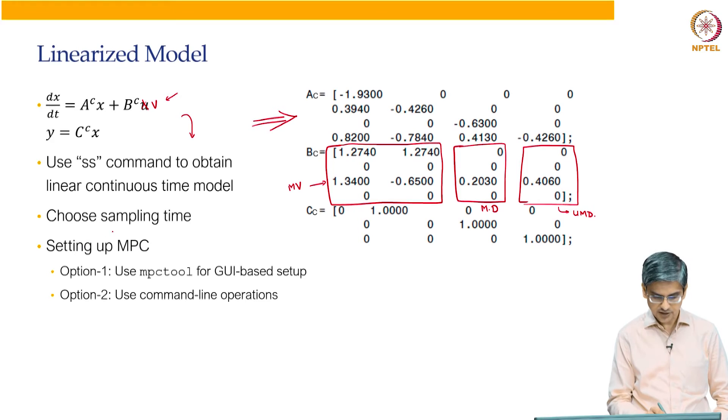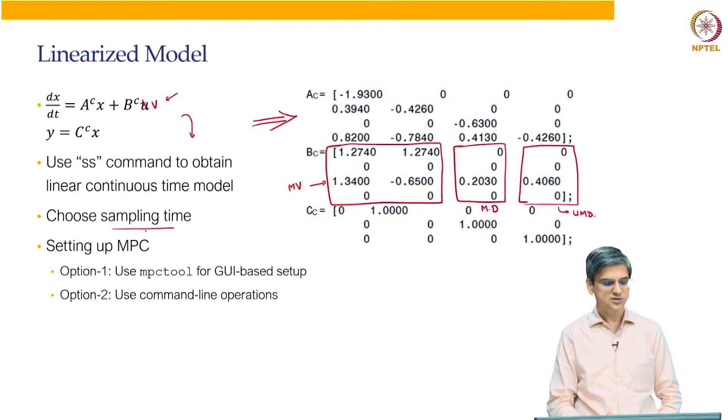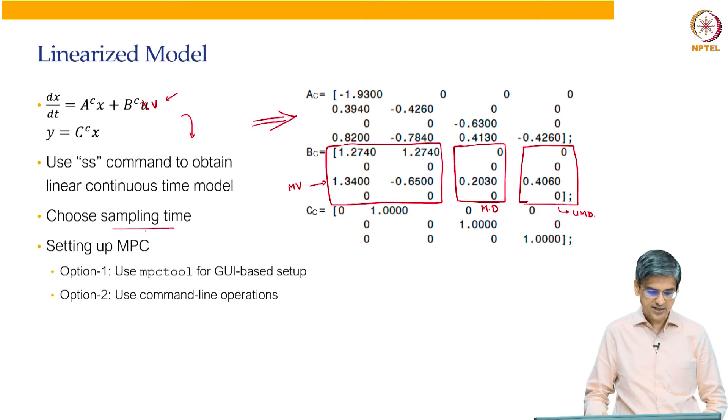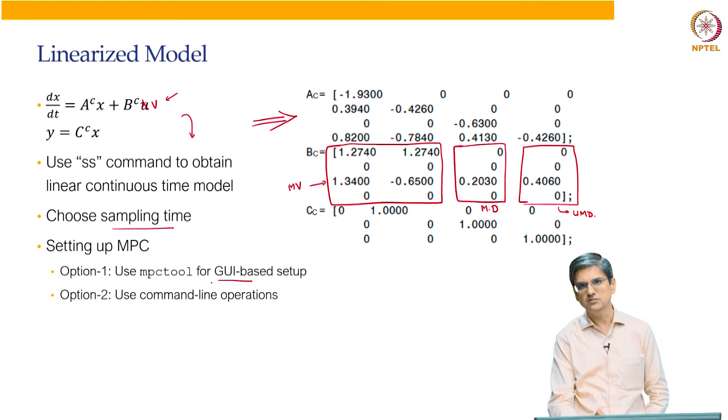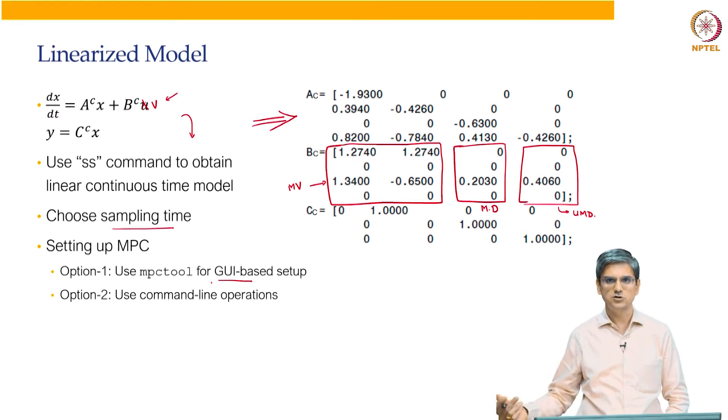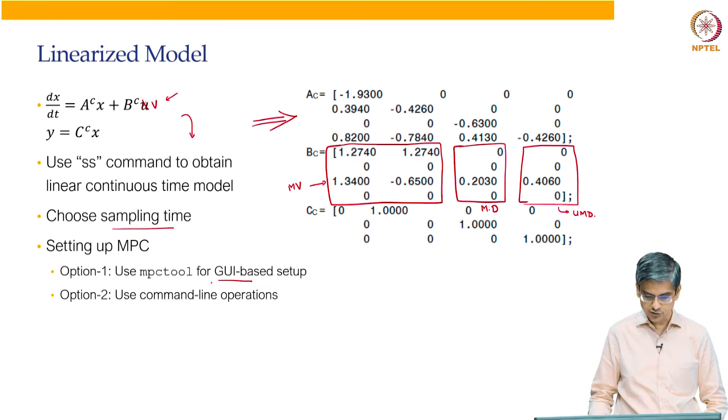So once you have a linear continuous time model, you can choose the sampling time. I think the sampling time that they have used in this example is two seconds. So you can use that sampling time and then you can go ahead setting up MPC toolbox. MPC toolbox, you have two options. You can use a GUI based setup, the graphical user interface based setup. It is much easier to start off with, but it is less powerful. On the other hand, if you want to really explore the entire power of MPC toolbox, you should start getting used to using the command line tools.